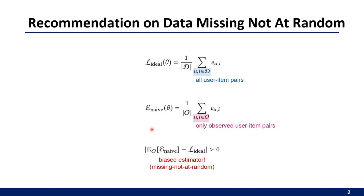However, this Naive Estimator is a biased estimator since the recommendation data is missing not at random.